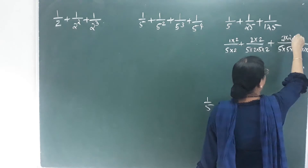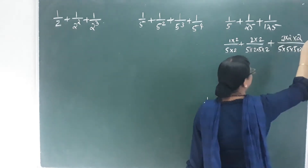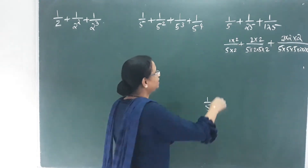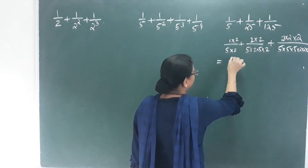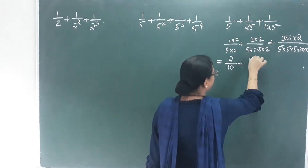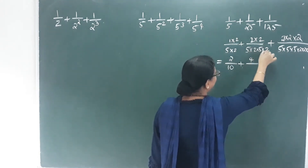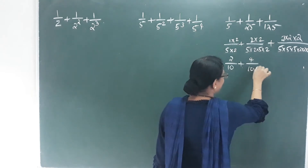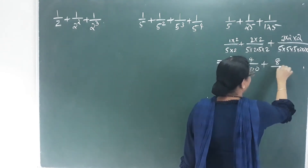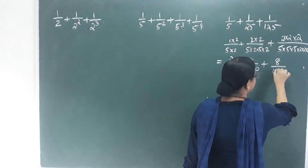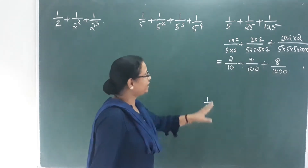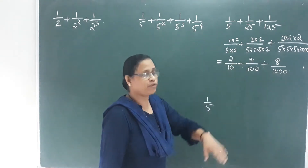In the value, change the value. I multiply the value. This is equal to 2 by 10, plus 4 by 100, plus 8 by 1000.